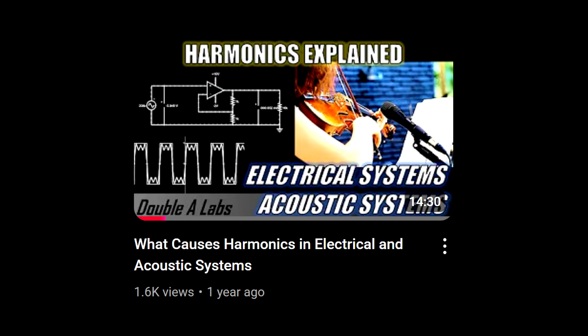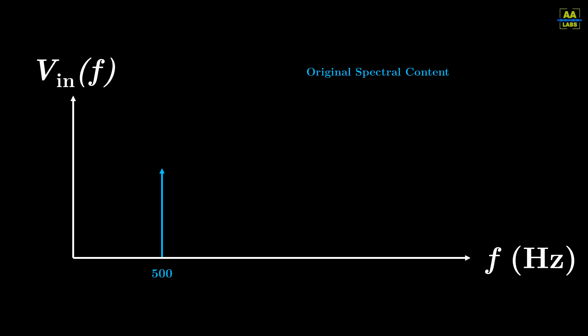In a previous video, we demonstrated how nonlinear systems create harmonic distortion. For example, if we put a 500Hz signal into a nonlinear system, we get an output that contains additional spectral content at multiples of 500, like 1000, 1500, and so on.